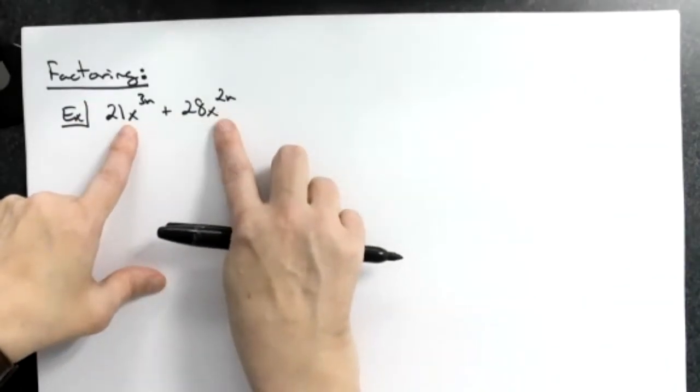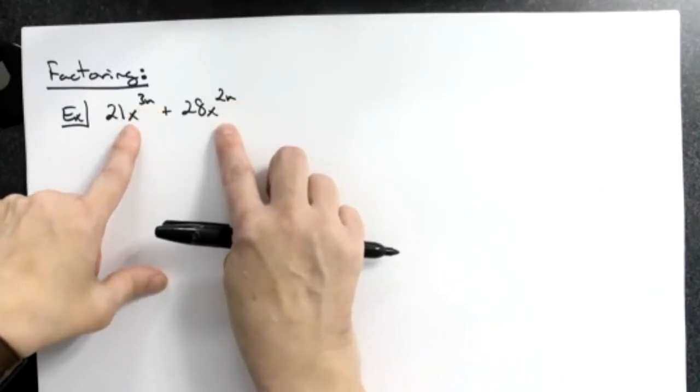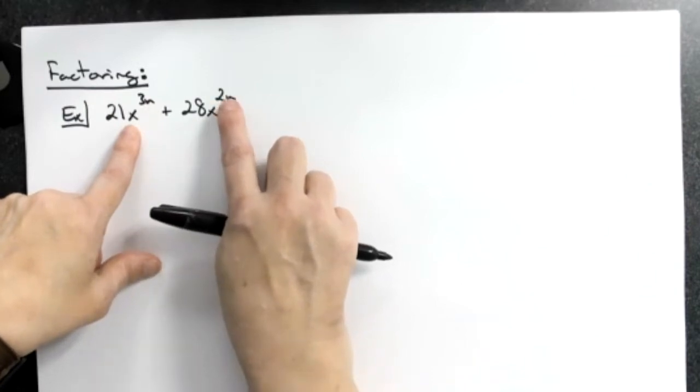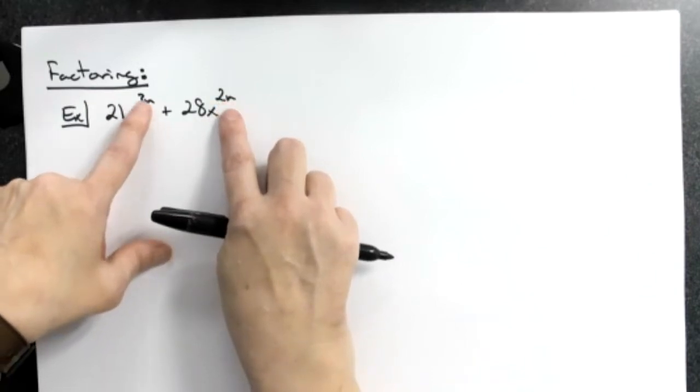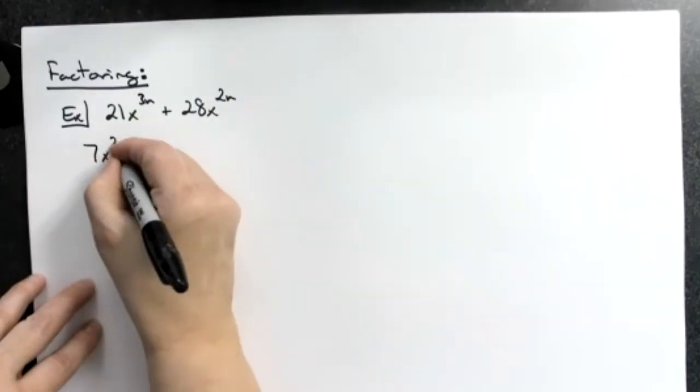Looking at this, I've got x raised to the 2n, I've got x raised to the 3n, so the most I can take out would be the smallest exponent. 2n is going to be smaller than 3n, so my greatest common factor is going to be 7x to the 2n.